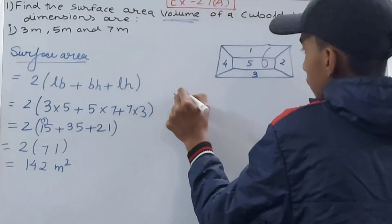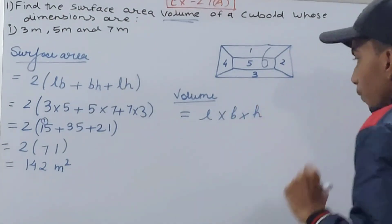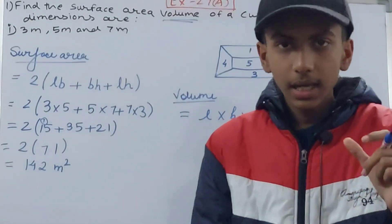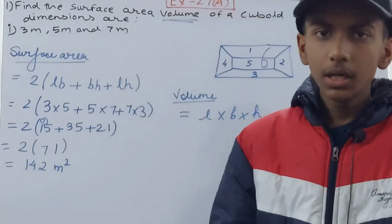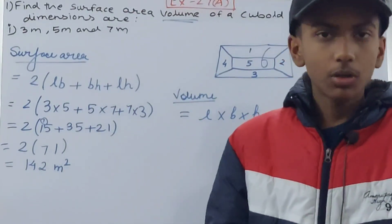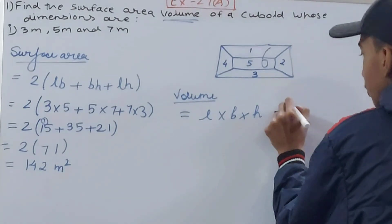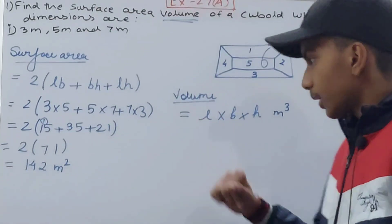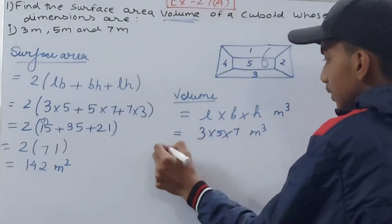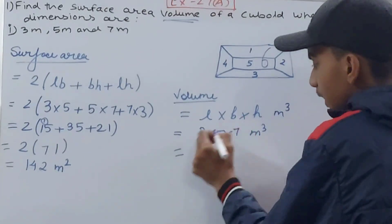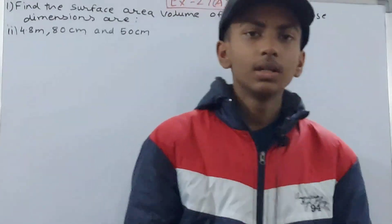Next is the volume. Volume is very simple: length × breadth × height. Volume is the total space occupied by a figure — just like in 2D figures we have area, in 3D we have volume. The unit will be cubic meters. So Volume = 3 × 5 × 7 = 105 cubic meters.